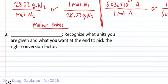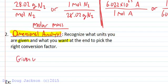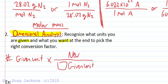And because it's a conversion factor we can use dimensional analysis, which just states that we recognize what units we're given and what we want at the end. So we're given and what we want to pick the right conversion factor. And so we keep going as long as we need to get to our desired unit.